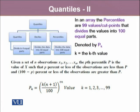Percentiles in an array are the 99 values that divide the data into 100 equal parts, which are denoted by pk. So in a given set of n observations, let's say x1 up till xn, the pth percentile p is the value of x such that p% or less of the observations are less than p and 100-p% or less of the observations are greater than p.